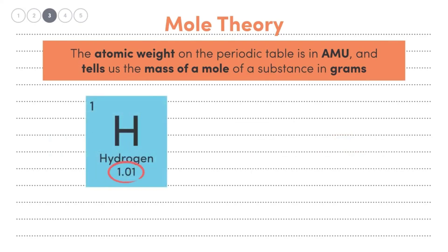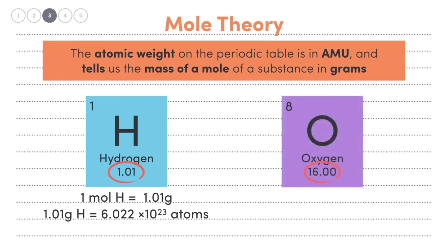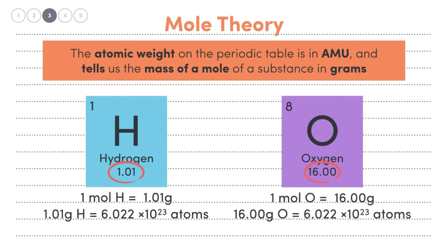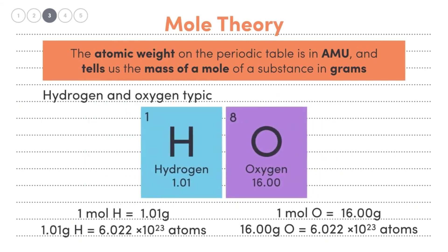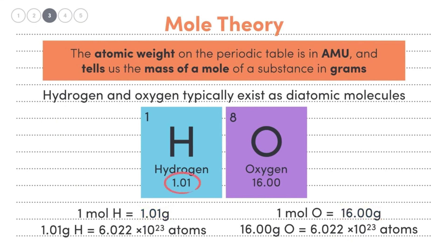The atomic mass of elements in the periodic table is in atomic mass units, and it actually tells us the amount of one mole of that element in grams. So one mole of hydrogen is 1.0 gram, meaning 1.0 gram of hydrogen is equivalent to 6.022 × 10²³ atoms. One mole of oxygen is 16 grams. But hydrogen and oxygen are diatomic molecules — two atoms bonded together — so we multiply their mass by 2, and that gives us what we call the molar mass.